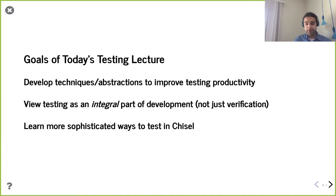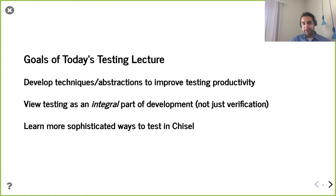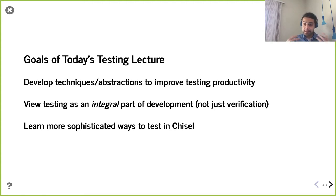Even in industry this comes out — you hear companies say they have a ratio of maybe two-to-one testers to developers, or two-to-one verification engineers per design engineer. When I hear these ratios, obviously testing and verification is very important. But I'm also thinking that's showing they aren't valuing testing and verification early enough in the design process. That ratio should be lower — not because verification is unimportant, but because having separate teams means you just toss it off rather than doing design and verification together.